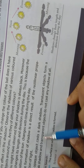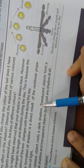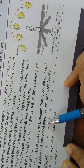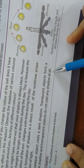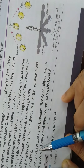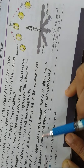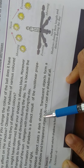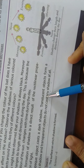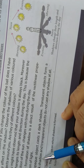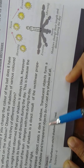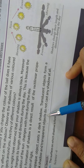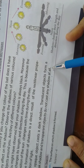An opaque object casts a dark shadow. Translucent objects form a weak shadow, and transparent objects do not cast any shadow at all. When an opaque object comes in between the path of light, a dark shadow is formed. When a translucent object is placed, a weak shadow is formed. And when a transparent object is placed, there will be no shadow at all.